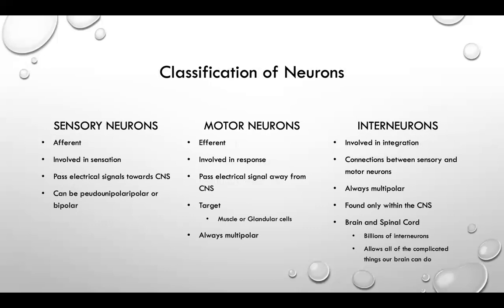Let's classify these neurons. Sensory neurons are involved in sensation and pass electrical signals towards the CNS. They are afferent and can be either pseudounipolar or bipolar. Motor neurons are involved in response and pass electrical signals away from the CNS towards a target. That target can either be muscle or glandular cells. They are always multipolar. Interneurons form connections between sensory and motor neurons. They are always multipolar. They can be found only within the CNS. Most of the brain and spinal cord is made up of billions of interneurons. The interneurons allow all of the complicated things our brains can do.